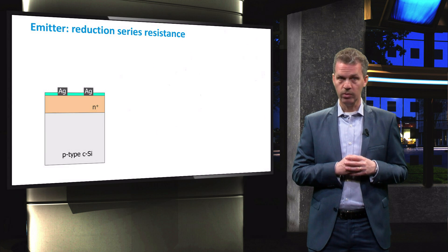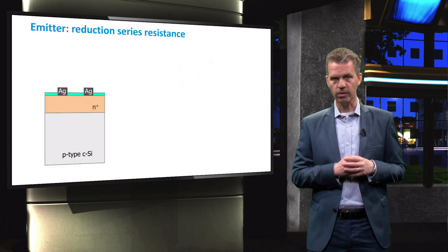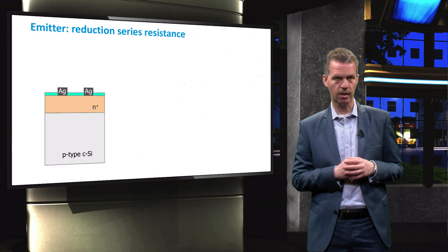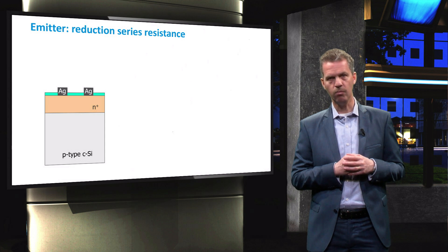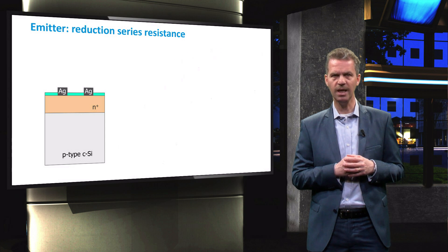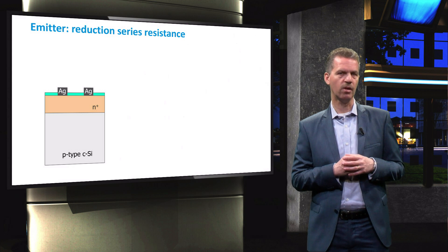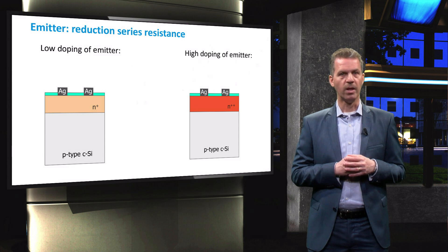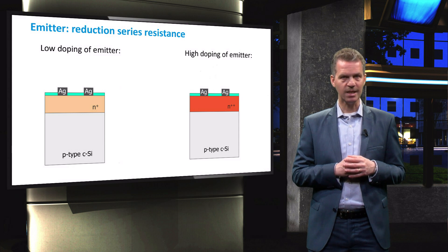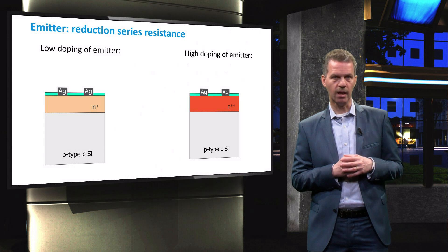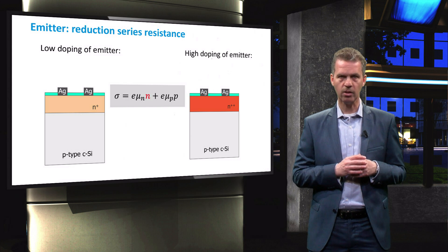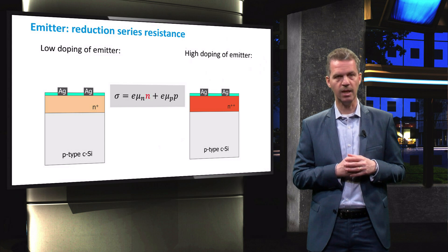In the previous video we discussed how the recombination rate at the surface can be reduced by passivating the dangling bonds on the crystalline silicon wafer surface with a passivation layer. After applying this passivation layer we can try to reduce surface recombination even more. As the surface recombination velocity is influenced by the minority carrier concentration, this velocity can be reduced by lowering this concentration. The minority carrier concentration can be lowered easily by increasing the doping concentration of the emitter layer. At the same time the conductivity of the emitter layer will be increased by the higher concentration of free electrons, indicated here by N.